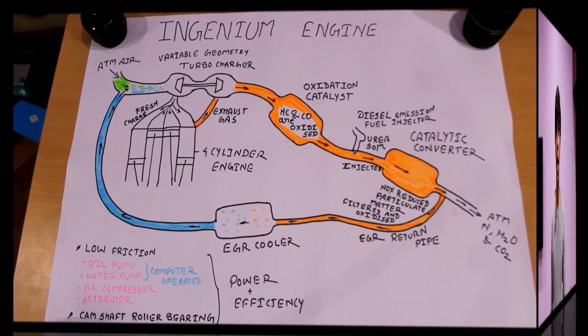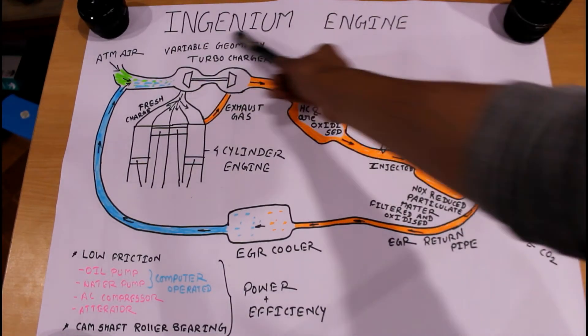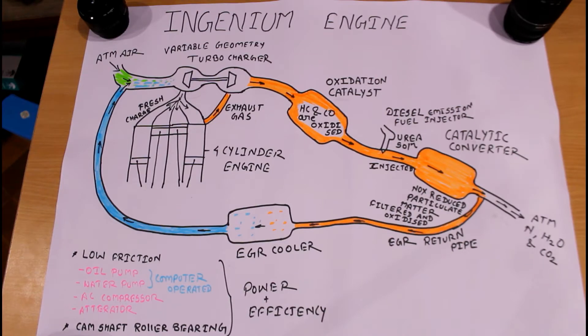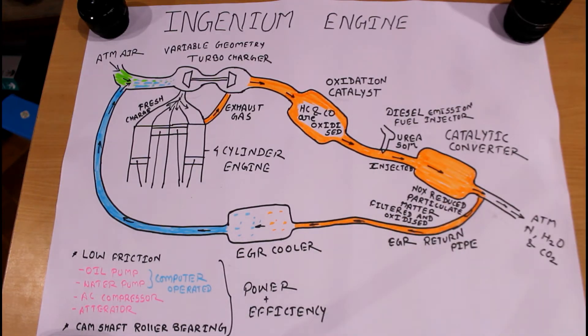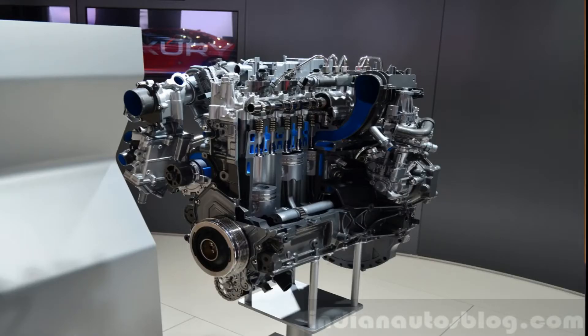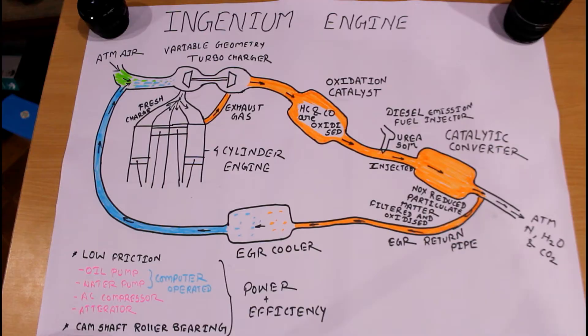So guys, our today's topic is the Ingenium engine, which is basically used for increasing the power and efficiency of an engine. The Ingenium engine is a very lightweight engine because it is made up of aluminum. Here we are using a two liter four cylinder Ingenium engine.